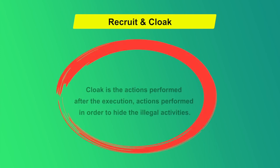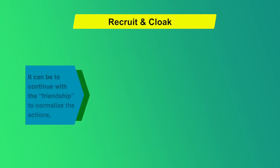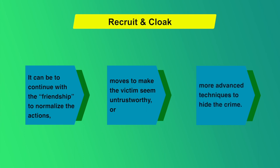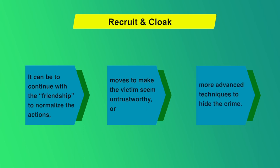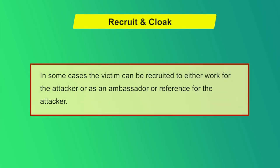The fifth step is recruit and cloak. Cloaking refers to actions performed after execution in order to hide the illegal activities. This can include continuing a friendship to normalize the actions, making the victim seem untrustworthy, or using more advanced techniques to hide the crime. In some cases, the victim can be recruited to either work for the attacker or serve as an ambassador or reference.